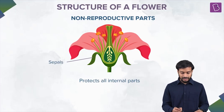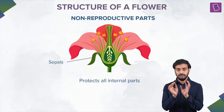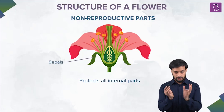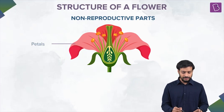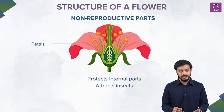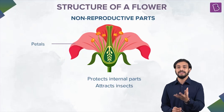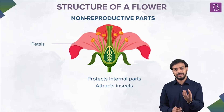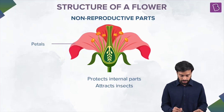The sepals are the outer layer — they protect all the internal parts. Then we have the petals. These are parts of the flower but they do not take part in the reproduction process.